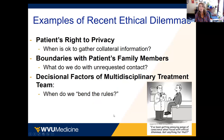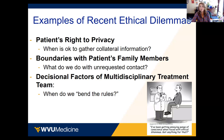In reaching out to you over this last month for suggestions on recent ethical dilemmas you've faced, here are the dilemmas that were shared with me or requested for group discussion. I heard an issue related to patients' right to privacy — so when is it okay to gather collateral information and what does that look like? What are our boundaries with patients' family members, particularly when those family members are contacting us in a way that we or the patient didn't request? And decisional factors of the multidisciplinary treatment team — how do we decide when to quote-unquote 'bend the rules'?